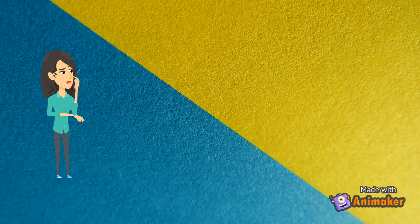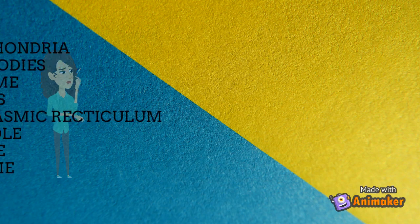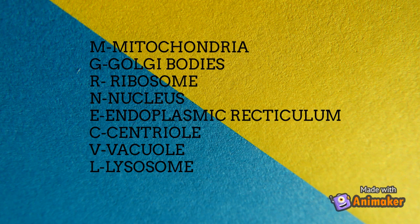They are: M for mitochondria, G for Golgi bodies, R for ribosomes, N for nucleus, E for endoplasmic reticulum, C for centriole, V for vacuole, and L for lysosome.